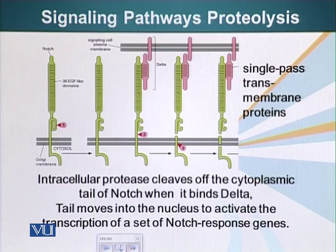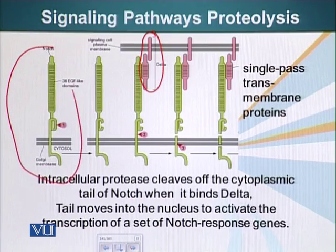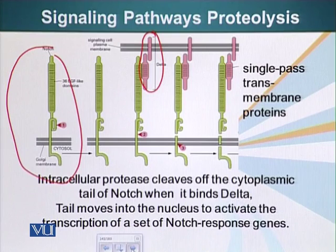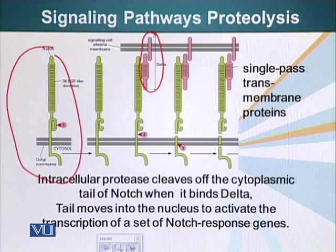Here you can see it in larger form. Delta is expressed by the cell going to become a nerve cell, and Notch is expressed on the neighboring cells. Mature Notch goes through three cleavages: the first occurs when it is being matured in the Golgi apparatus, and the last two cleavages depend on Notch's interaction with Delta.